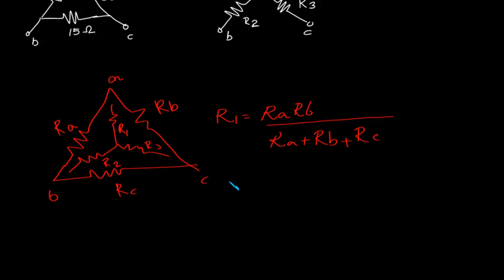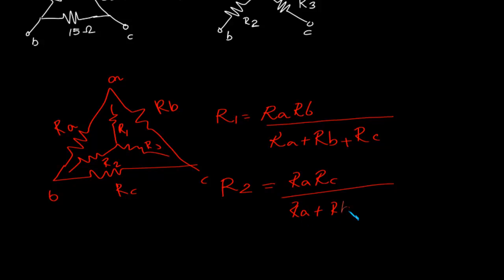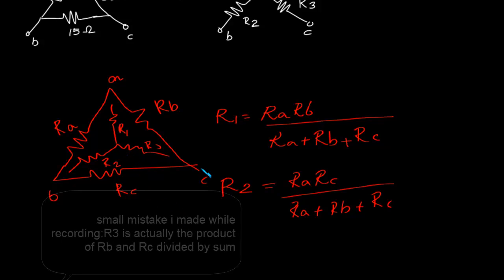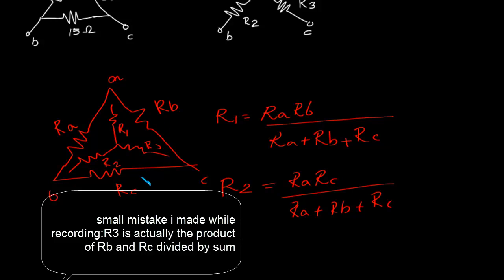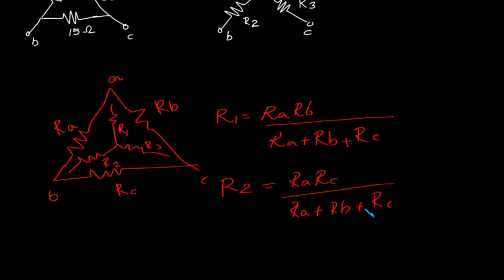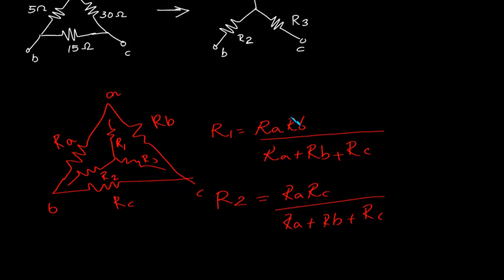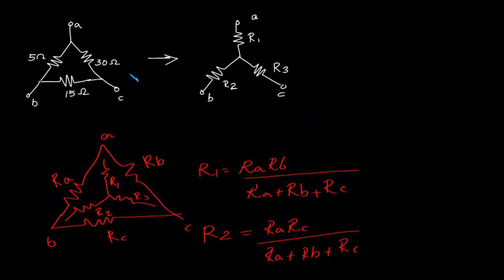To find out R2, we will take the product of Ra and Rc and divide it by Ra plus Rb plus Rc, which is the sum of resistances. Similarly, we can find out R3: R3 will be the product of Ra and Rc divided by the sum of the resistances Ra plus Rb plus Rc. By using these three equations it is possible to easily convert delta to Y.